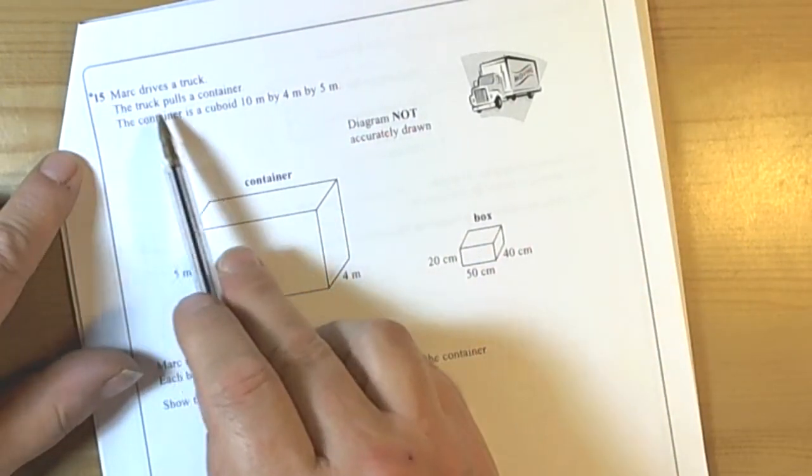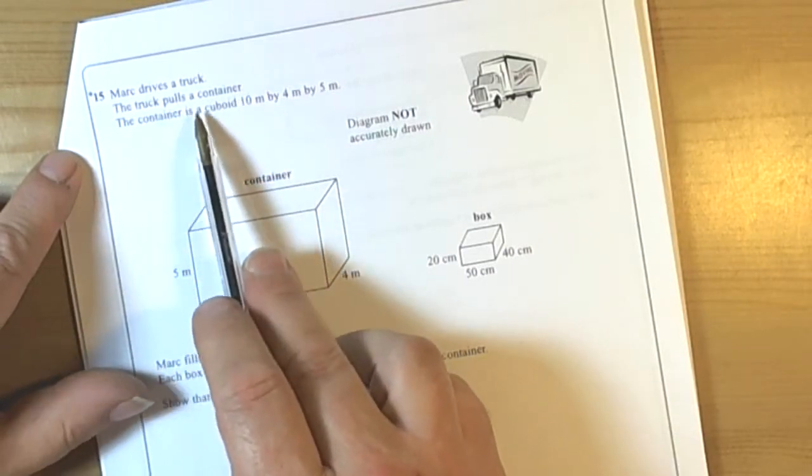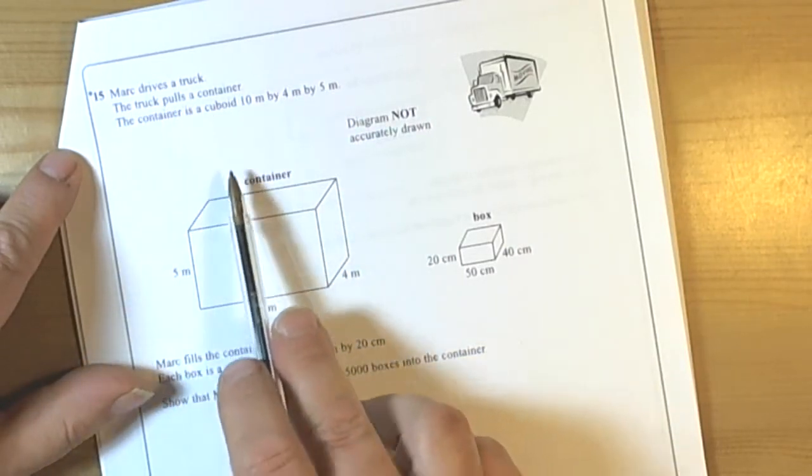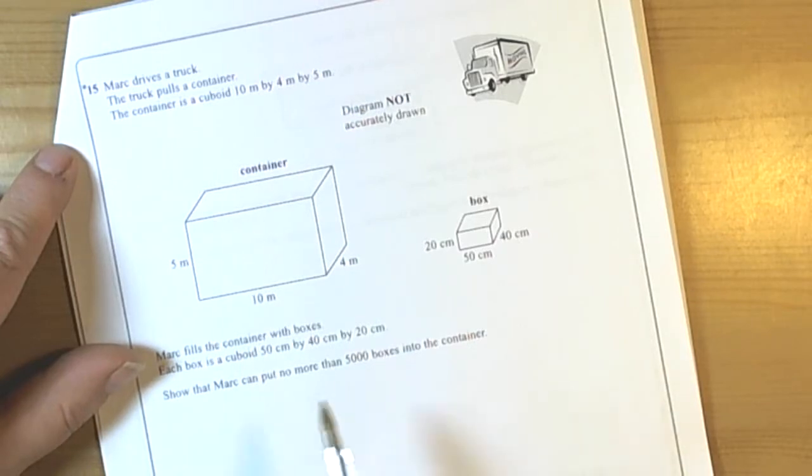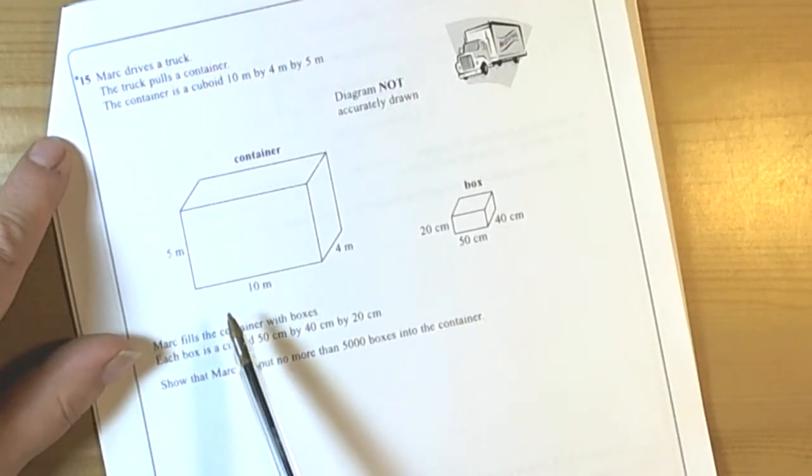Here we've got a star question so it's obviously going to involve quite a bit of working out and some written explanations in words to conclude what we think the answer is going to be that they wanted us to work out.